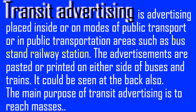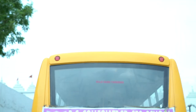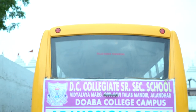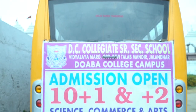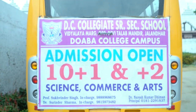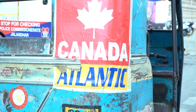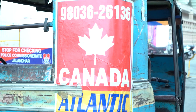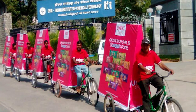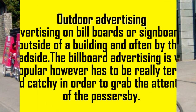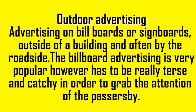Transit advertising is advertising placed inside or on modes of public transport, or in public transportation areas such as bus stands or railway stations. These advertisements are pasted or printed on either side of buses and trains and can also be seen at the back. The purpose of transit advertising is to reach the masses.